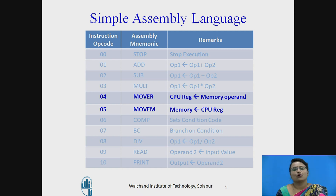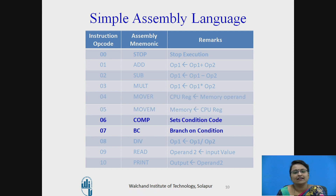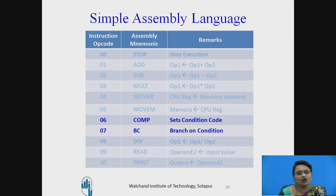The next two mnemonic codes are for moving contents from a memory address to a register and from a register to a memory address, having opcodes 4 and 5. The next two are COMP and BC, where COMP is for comparing two operands. It does not affect any operand — it only affects the condition codes, setting the condition flags for later execution. BC is branch on condition, which moves the location counter to a particular location where execution resumes.